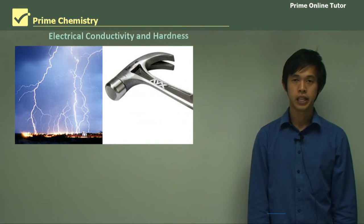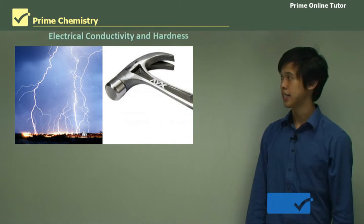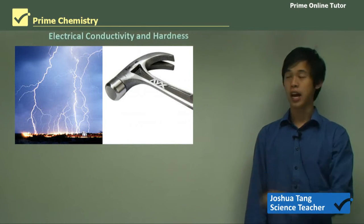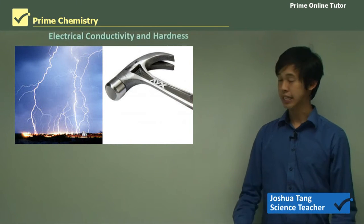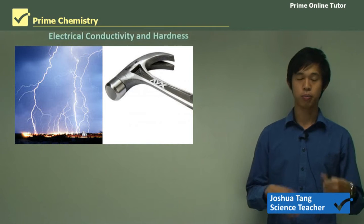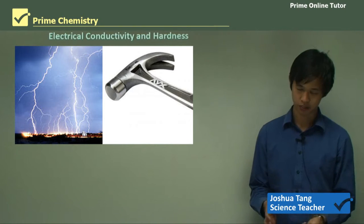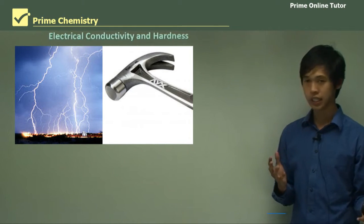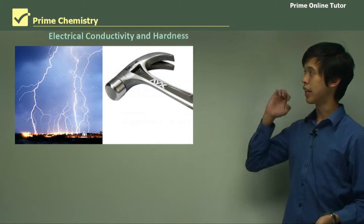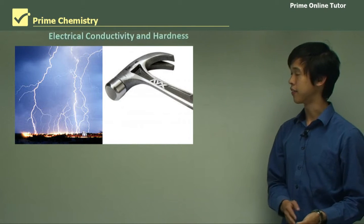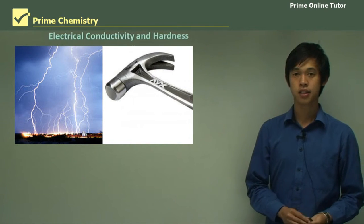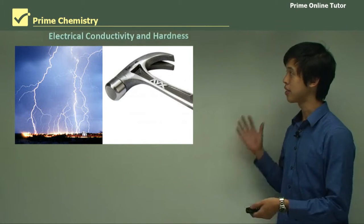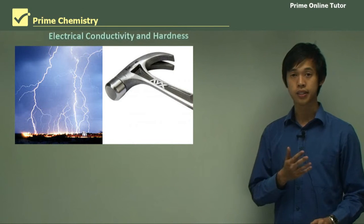Hello everyone, welcome again. Today's lesson will be on the chemical Earth. In previous lessons we've looked at bonding and different types of bonding. In today's lesson, we're going to look at electrical conductivity and hardness, and see how the different types of bonding influence these two properties.